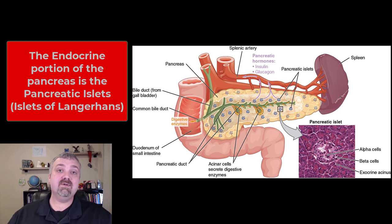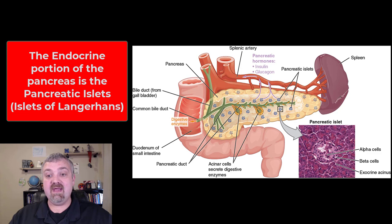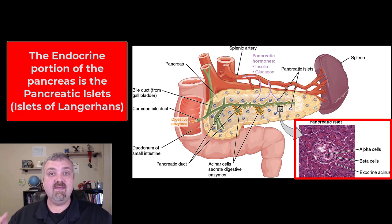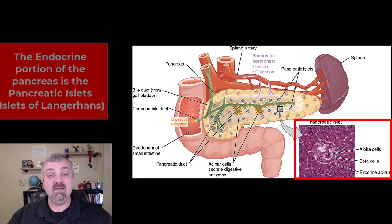The 1% of the pancreas that is endocrine is actually the pancreatic islets — called the islets of Langerhans when I was a student — and they're going to be producing hormones like insulin and glucagon.